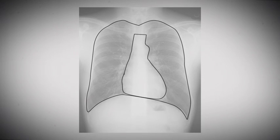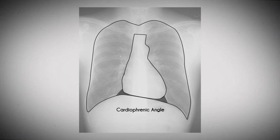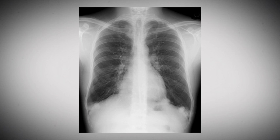Going back to the schematic, note the same structures: the aortic knob, the pulmonary outflow tract, and the normal concavity of the aorticopulmonary notch or window. Also shown are the cardiophrenic angle between the heart and the diaphragm, and both the right and left costophrenic angles between the diaphragm and the ribcage. If there are lesions in these locations, they change the opacity seen in the chest film and may silhouette out the normal diaphragm or heart borders. If the normal concavity of the aorticopulmonary window is obliterated, further investigation — usually a CT scan — is warranted.